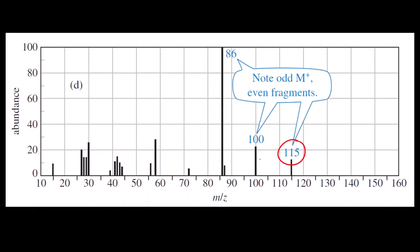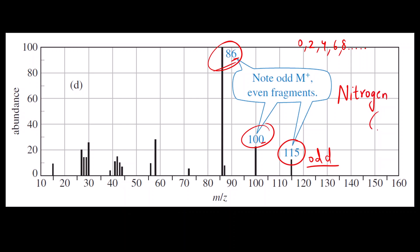The last graph shows that the M+ ion peak is odd, and there are some even fragments — for example, 86 is even, and 0 is also even. An odd M+ ion with even fragments tells us the heteroatom is nitrogen. In this way we can identify which heteroatom is present in a given unknown compound using the mass spectrum.